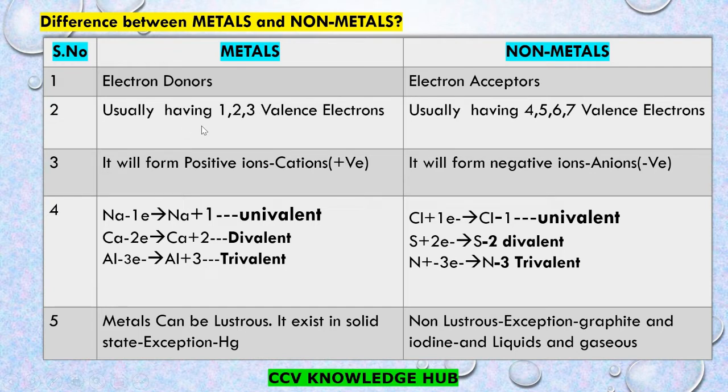Metals usually have one, two or three valence electrons. Non-metals usually have four, five, six or seven valence electrons.